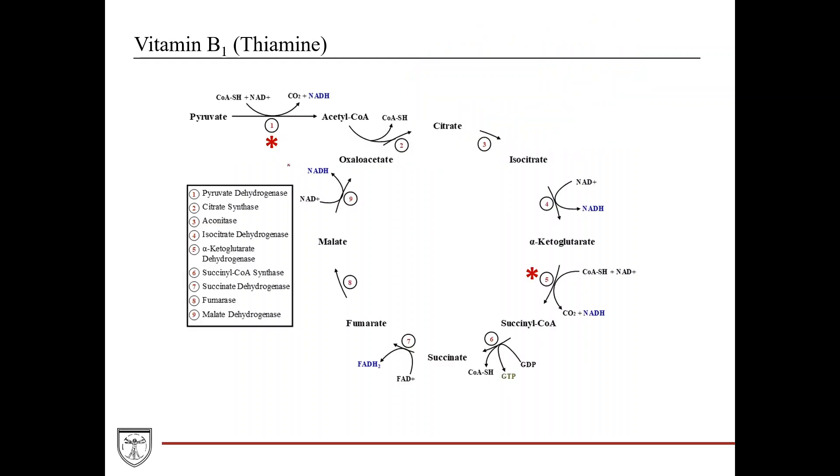Here's the citric acid cycle again. Pyruvate dehydrogenase, this first reaction that converts pyruvate into acetyl-CoA, requires B1 or thiamine. And then alpha-ketoglutarate dehydrogenase, the fifth enzyme here, also requires B1 or thiamine, which converts alpha-ketoglutarate into succinyl-CoA. If you have a thiamine deficiency, you can't efficiently carry out the citric acid cycle because these enzymes require it. You're going to significantly decrease the amount of ATP you can produce.